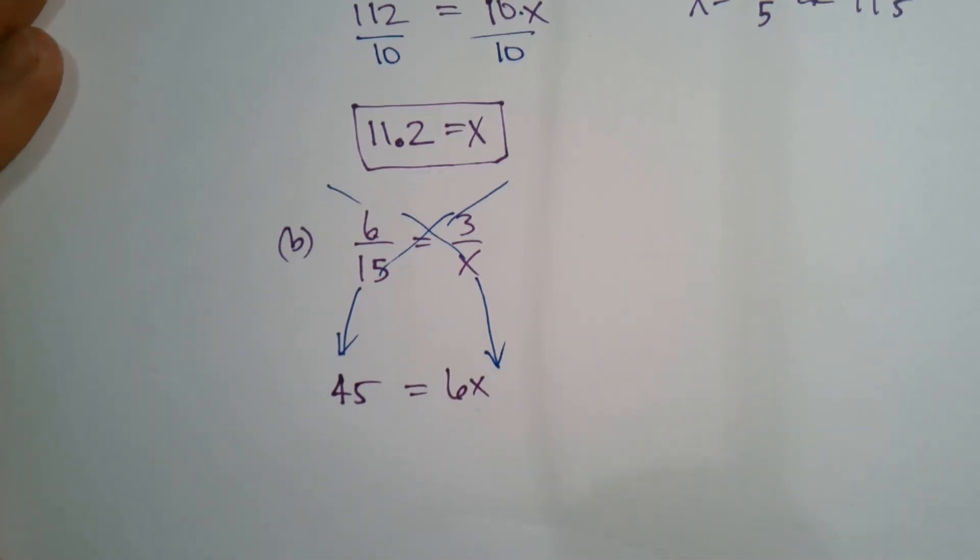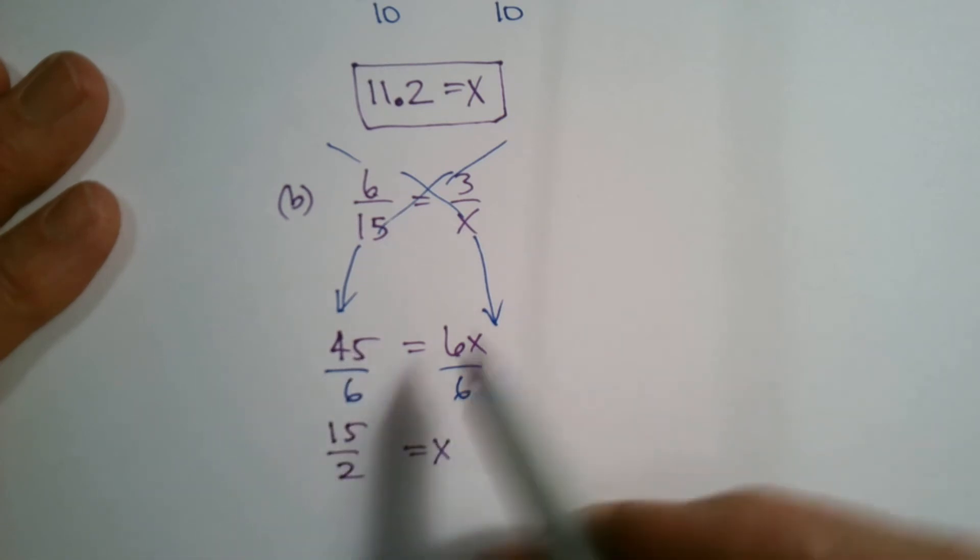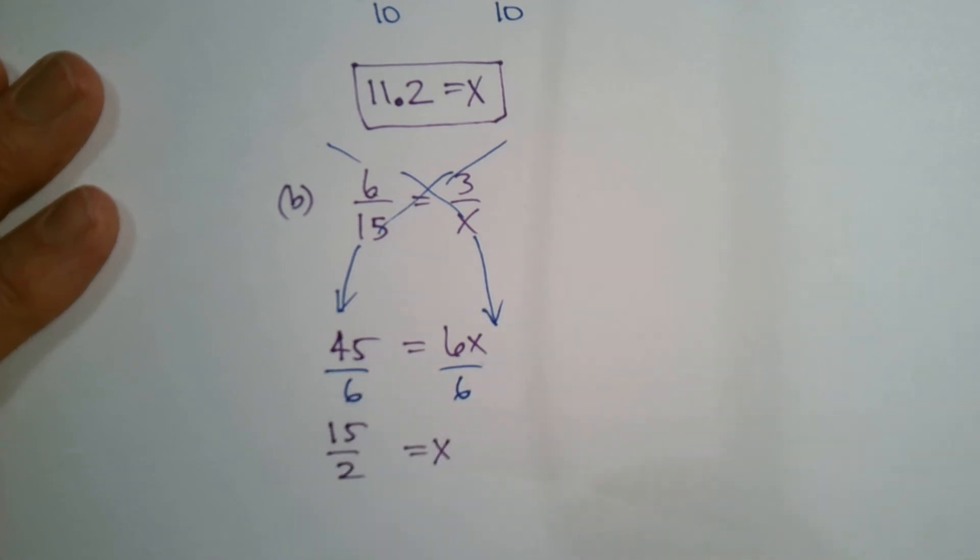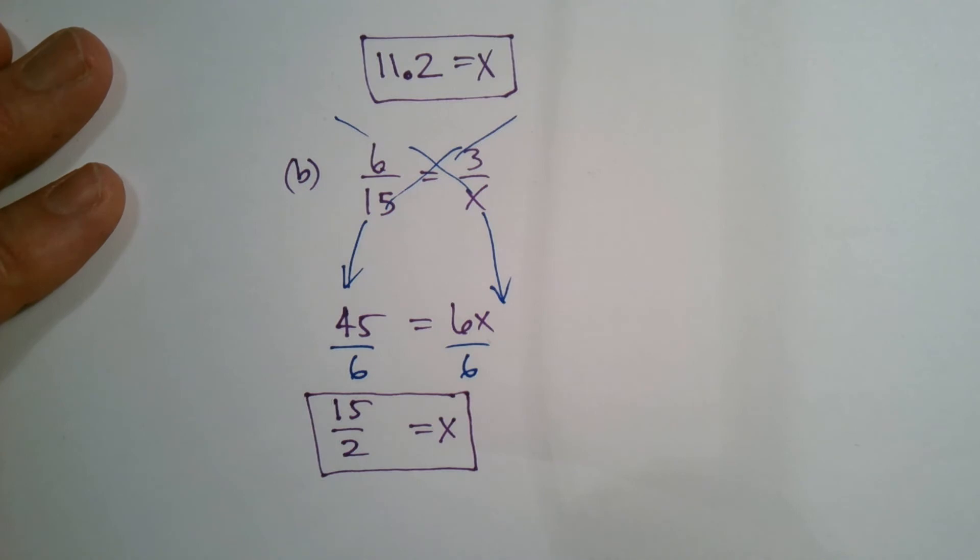So three times 15 is 45 is equal to six times X is six X. And then quickly I go ahead and divide both sides by six to get my X alone because six divided by six crosses to be one. And then 45 divided by six—let's see, I think I can simplify that top and bottom by three. So that becomes 15 halves. If I take three into each of the numerator and denominator, I get 15 halves. So you could stay there and X equals 15 halves, or you could say seven and a half or continue on with that.